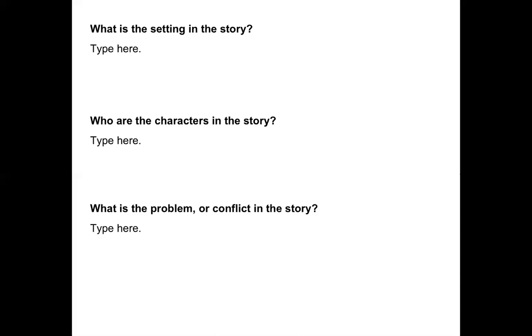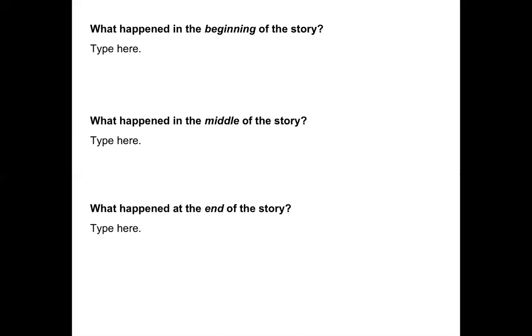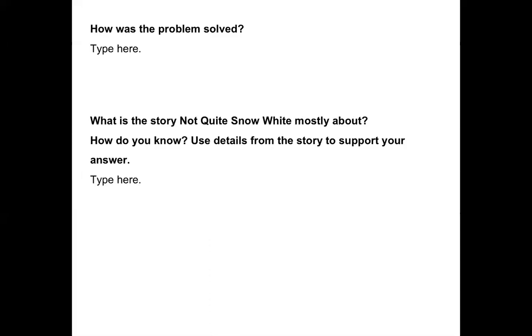Now let's get into story structure. What is the problem or conflict in the story? Go back and read and type in what the conflict is. Next, retell what happened in the beginning of the story in a couple of sentences. Then tell me what happened in the middle of the story, and finally what happens at the end. We also talked about how the problem was solved — how was Tamika's problem solved at the end of the story? Who helped her? What did they do? How did she solve her problem?